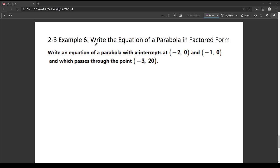So in this video, what we are doing is we are writing the equation of a parabola in factored form when we are given the x-intercepts, or the zeros, and then we're given another point that they pass through.